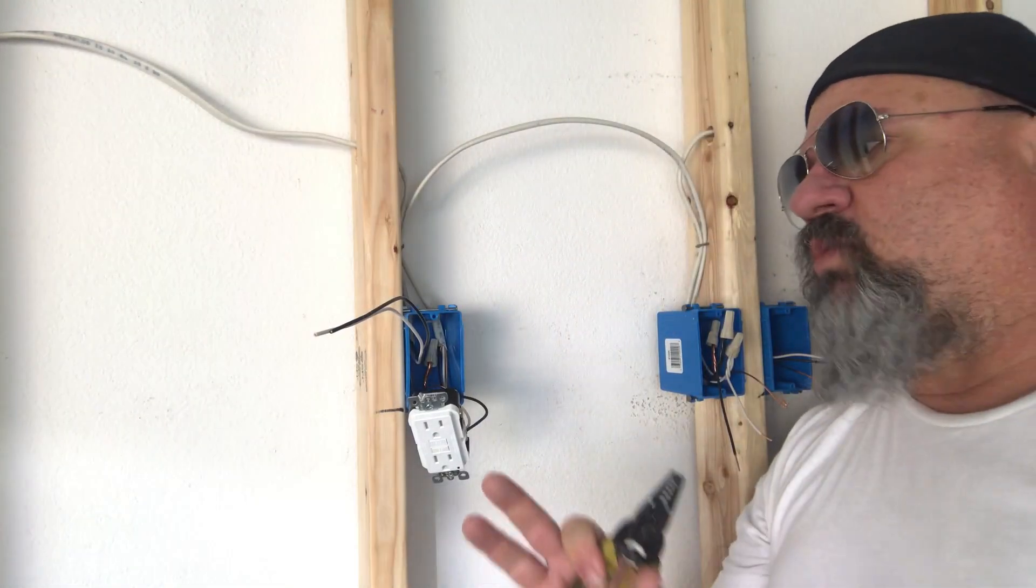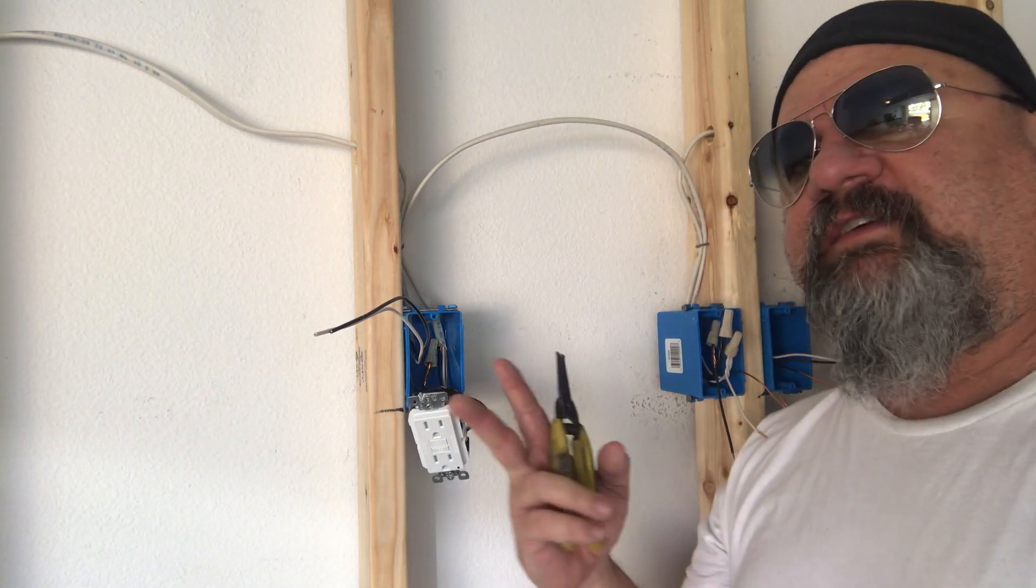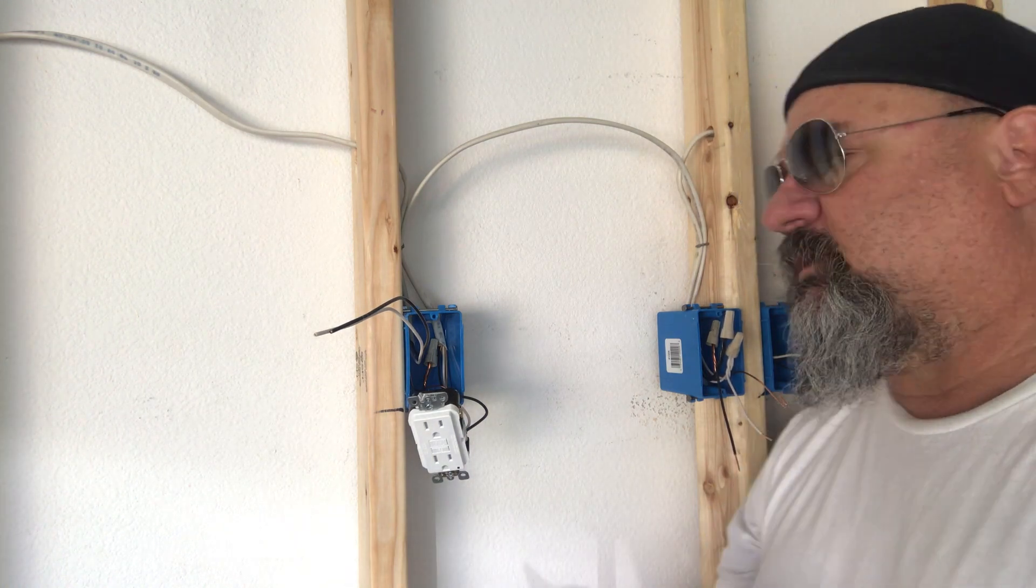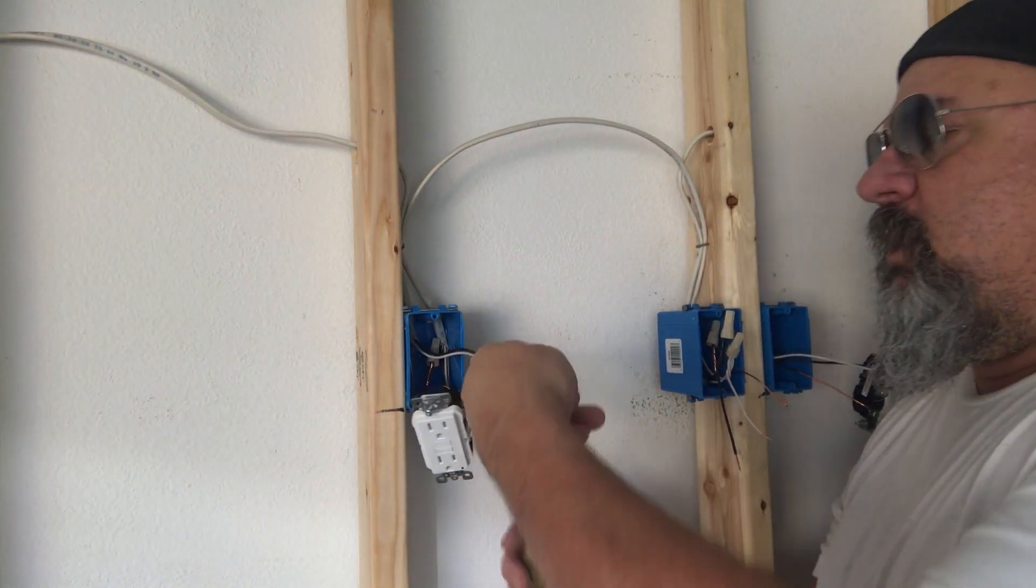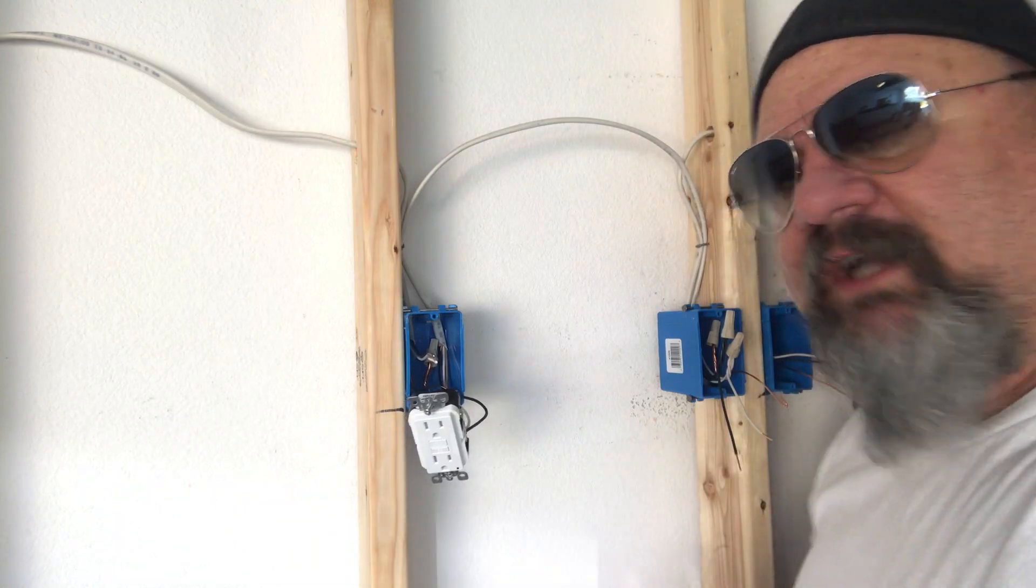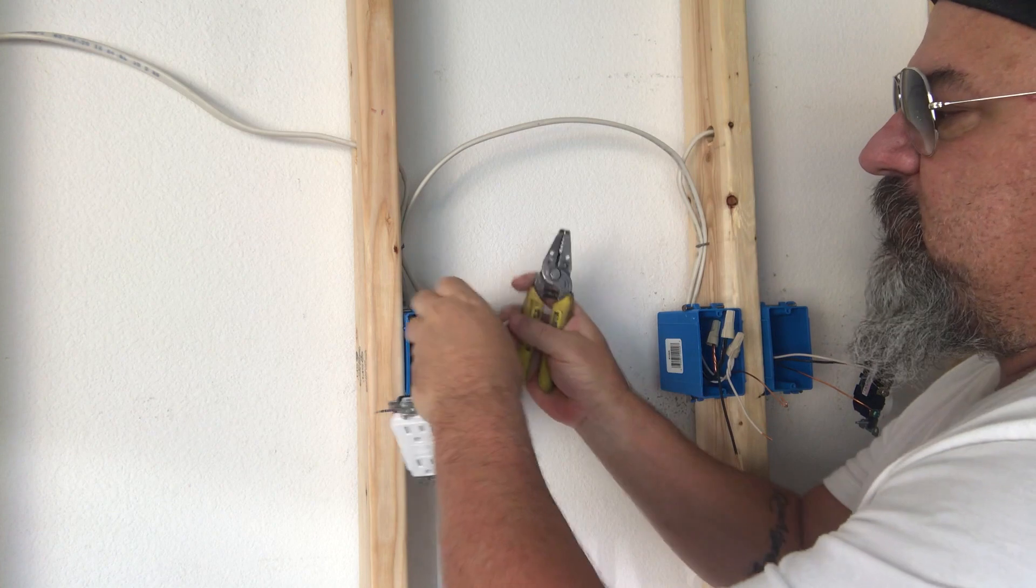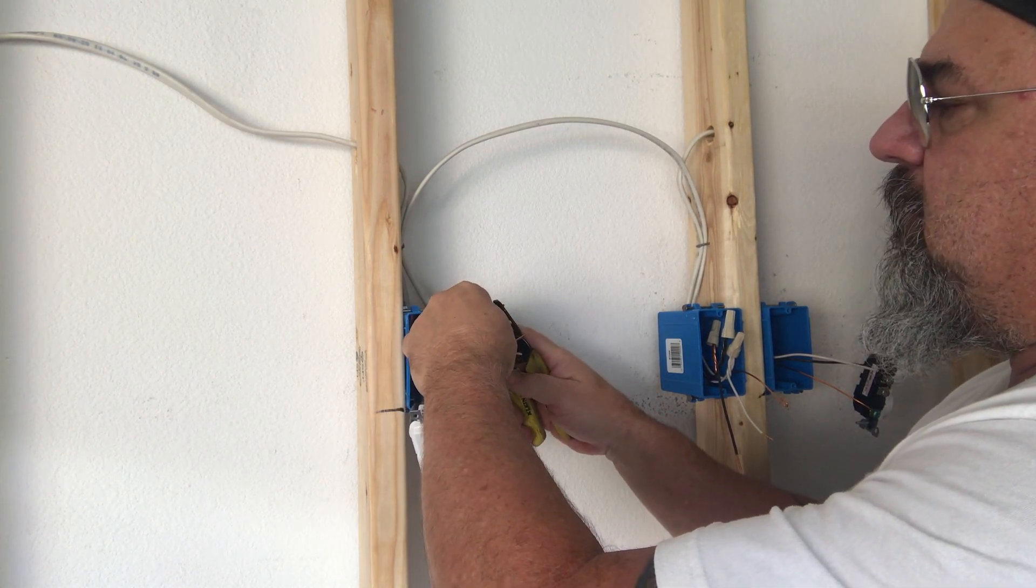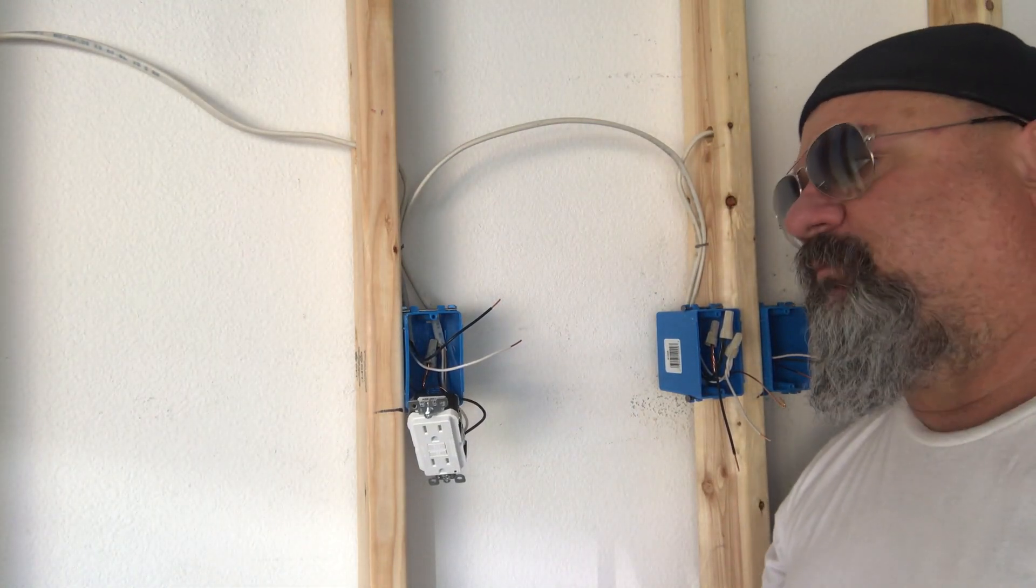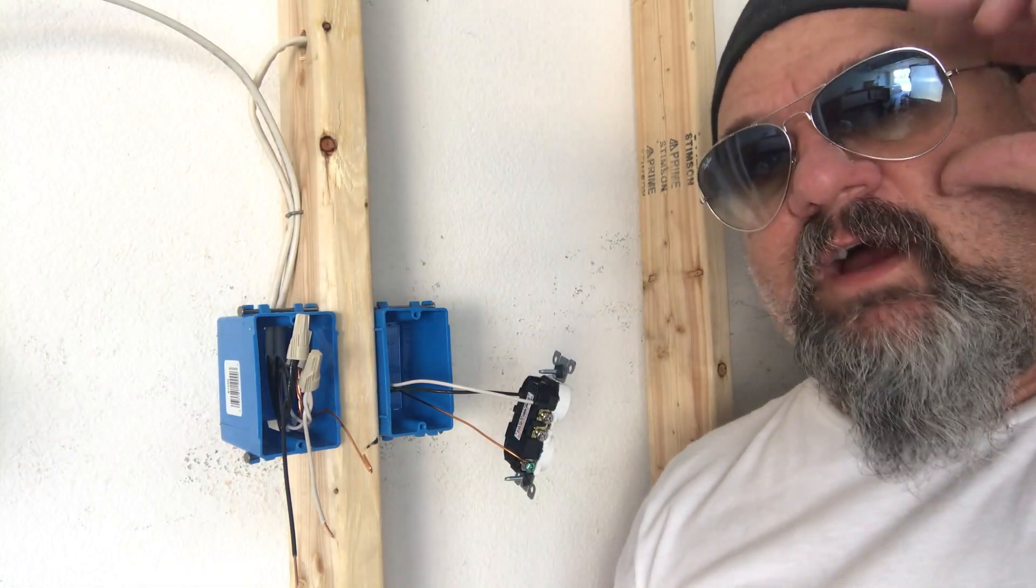And there we have the load side of it. Now we're going to install the line side, very simple. The reason why I do the load first is because if I would have stripped out all these at the same time, I might have got mixed up and forgot what I was doing, got distracted like a taco truck come by or somebody had a beer. I already have that hooked up. Now I have no doubt I know that this is my line side because the only two wires left in there, because I made it that way. So I'm just going to do just the way we did on the load side. The silver terminal for the neutral and then the gold terminal for the hot.